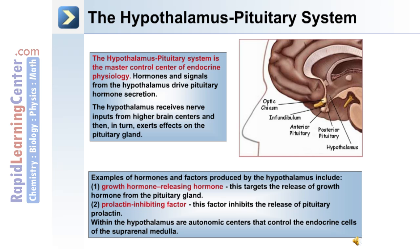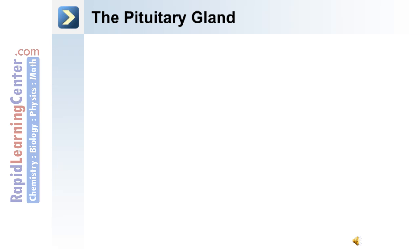Examples of hormones and factors produced by the hypothalamus include: number one, growth hormone releasing hormone, which targets the release of growth hormone from the pituitary gland; number two, prolactin inhibiting factor, which inhibits the release of prolactin from the pituitary. Within the hypothalamus are autonomic centers that control the endocrine cells of the suprarenal medulla.